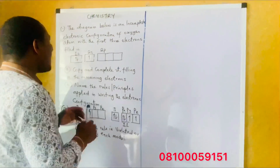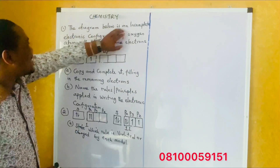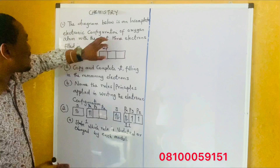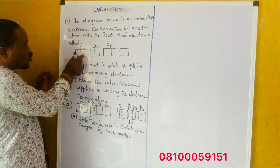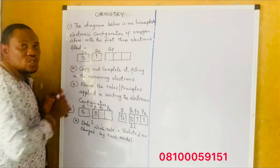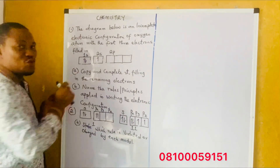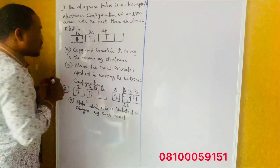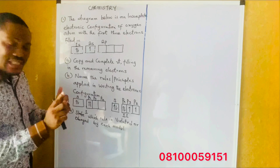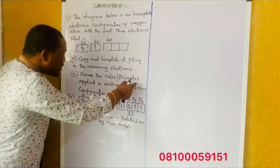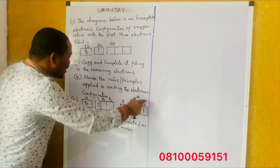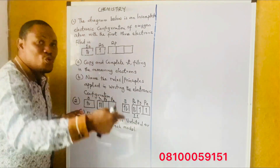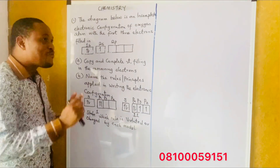So let's go to what we have for today. The diagram below is an incomplete electronic configuration of oxygen atom with the first three electrons filled in. They filled two into the 1s orbital and they filled one into the 2s orbital, making it three electrons. Then it says copy and complete it, filling in the remaining electrons. Now look at the second question: name the rules or principles applied in writing electronic configuration, meaning there is a rule that should govern you when filling these particular orbitals.